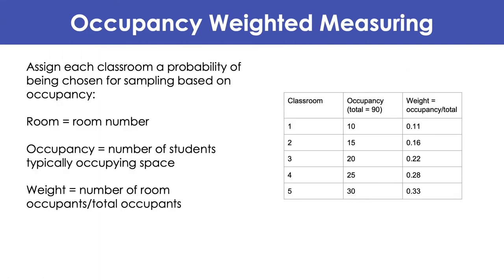Another option for measuring average CO2 levels is occupancy-weighted measuring. This means that classrooms with high occupancy have a greater probability of being picked to monitor. Especially when monitors are limited, it's good practice to prioritize high-occupant spaces with relatively long duration occupancy. You find the typical occupancy of each classroom and weigh each classroom based on its fraction of occupants to the total. For example, the classroom with the most occupants has a 33% chance of being picked, while the classroom with only 10 occupants has about an 11% chance.